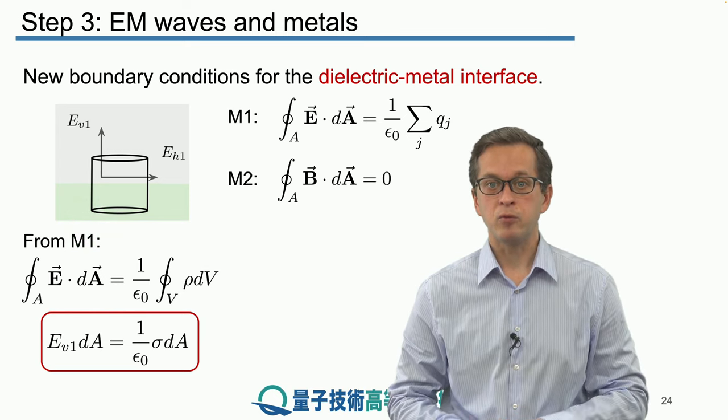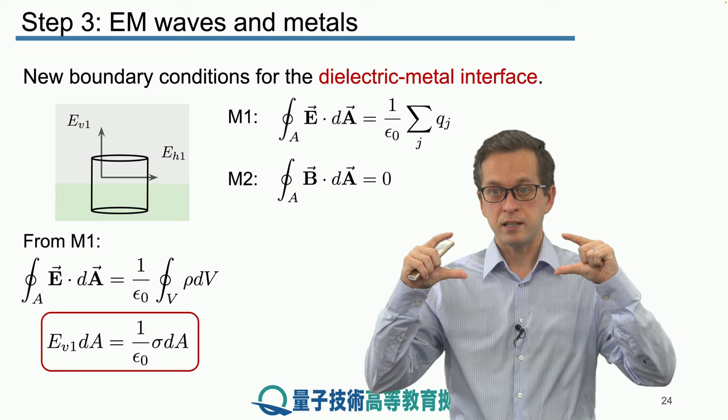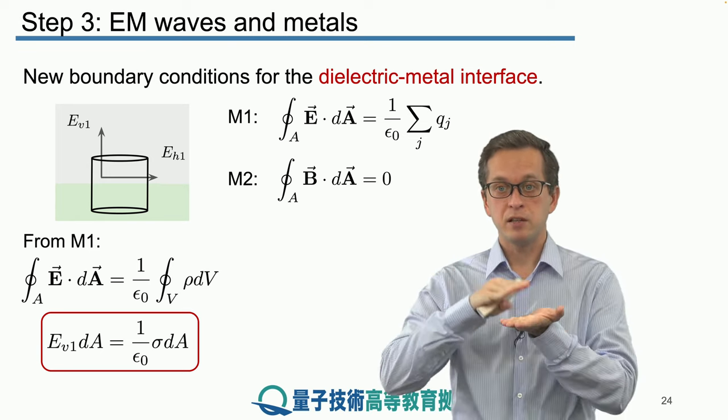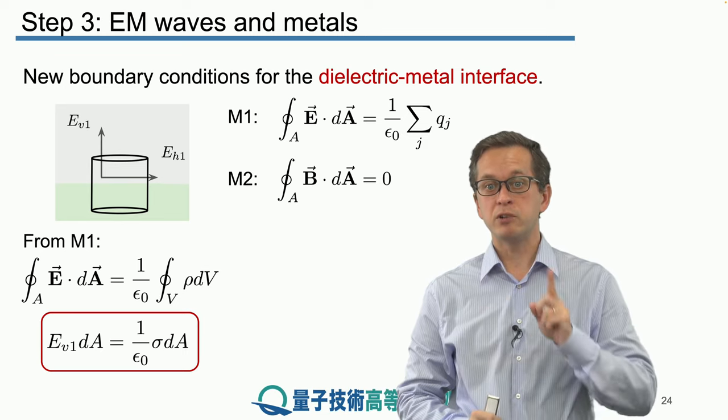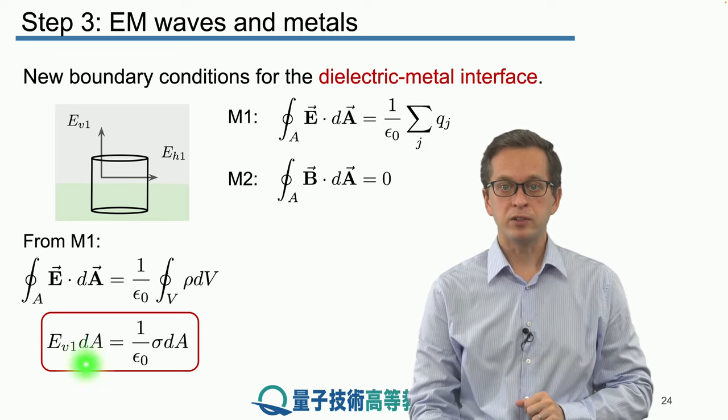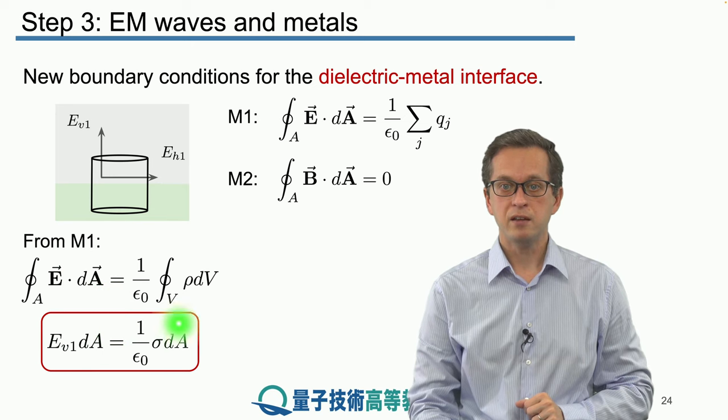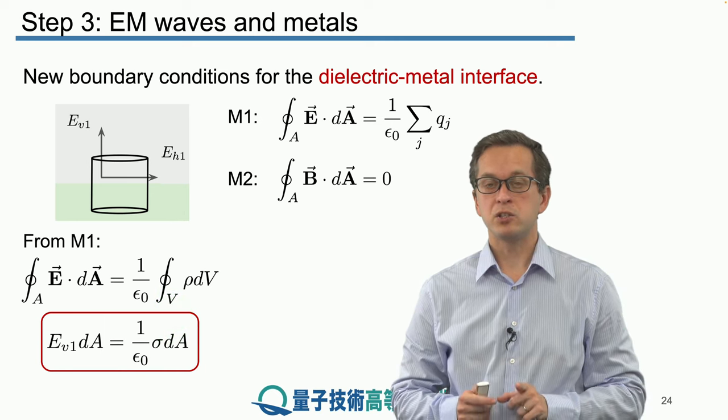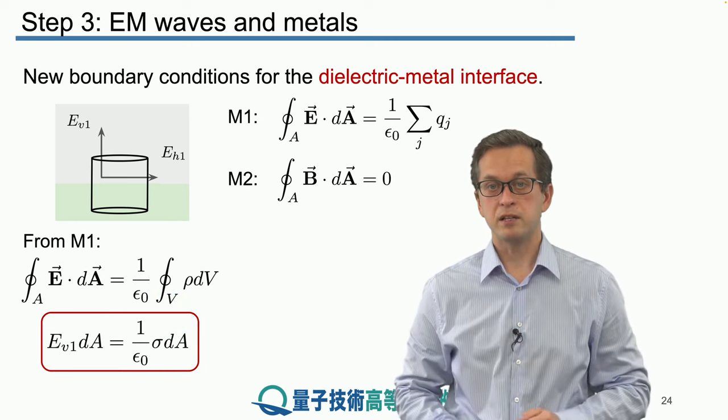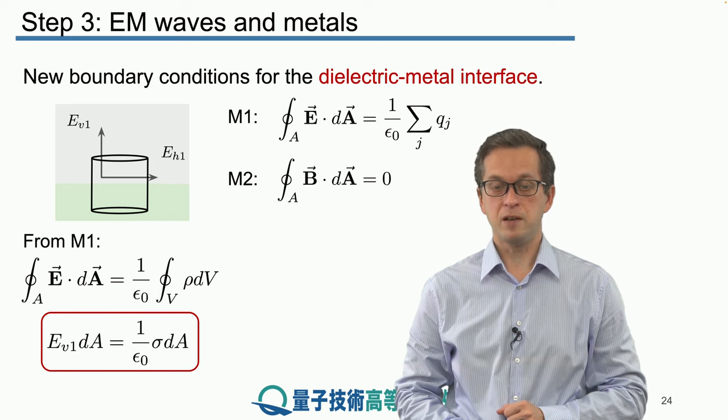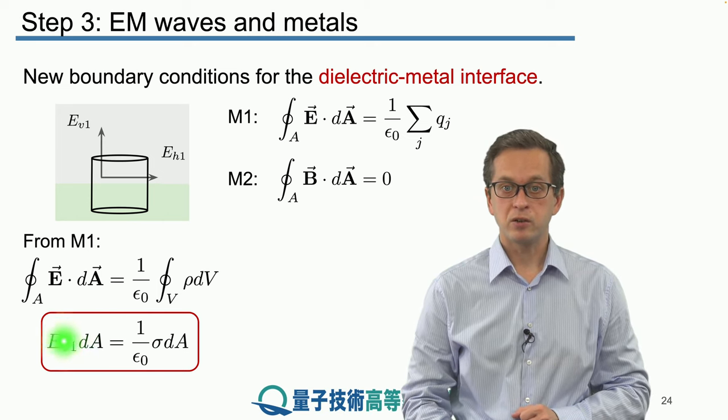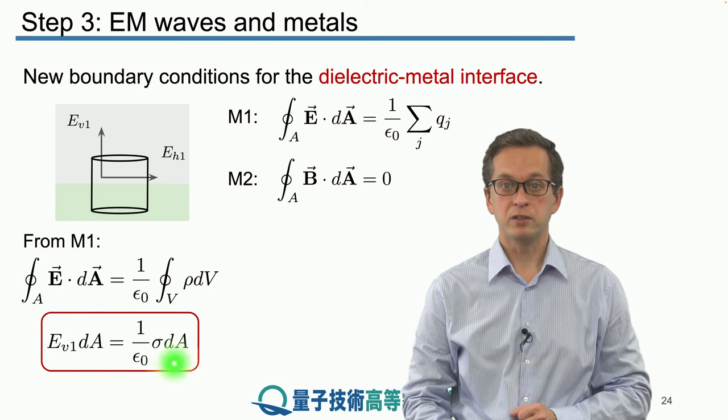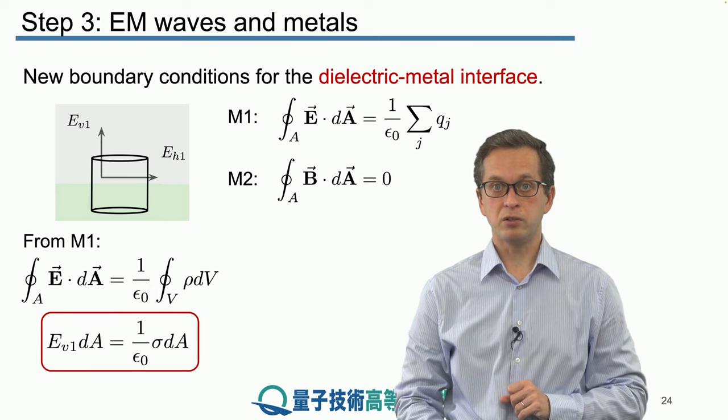We should have written also the contribution from E_H1 through the side of the cylinder, but we know the trick that we need to apply. We have to shrink the cylinder such that the height of the sides is zero, so it effectively just becomes a circular surface sitting on the boundary between the dielectric and the metal. And the area of that boundary is given by dA on both sides here, and this sigma is then just the charge density inside this surface dA. We see that the vertical component of the electric field is given by the following expression. This is our new boundary condition for metals.